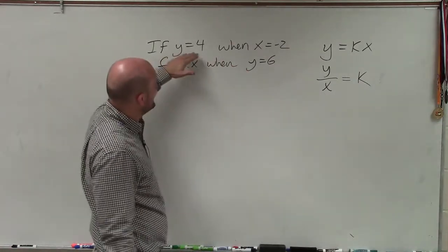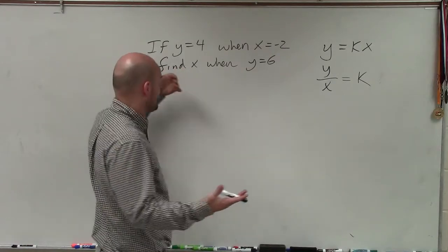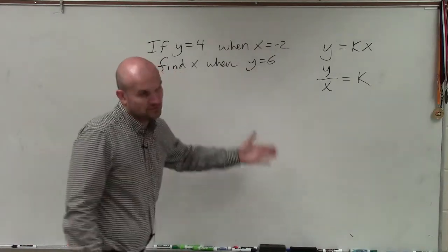And so it says, if y is equal to 4 when x is equal to negative 2, so that's going to be one direct variation. They want us to find x when y is equal to 6.